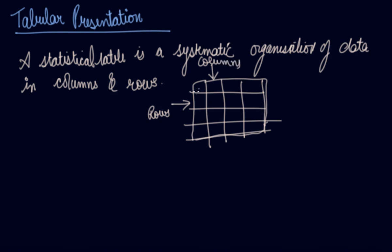Your horizontal dissections are known as rows whereas your vertical dissections are known as columns. Now let's understand what is tabulation.